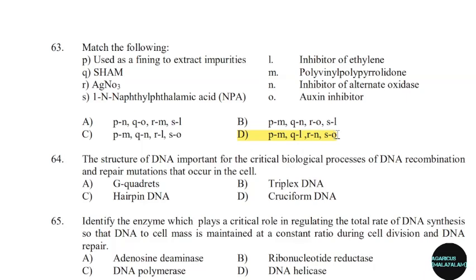64th question: The structure of DNA important for the critical biological processes of DNA recombination and repair mutation that occurs in the cell. Correct answer: Option D — Cruciform DNA.